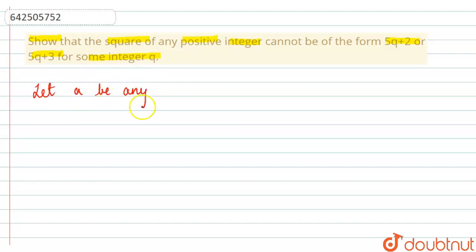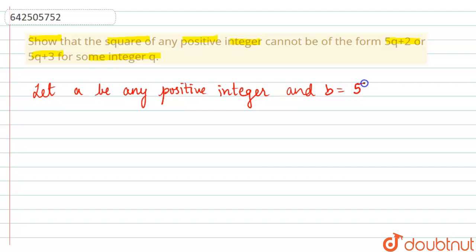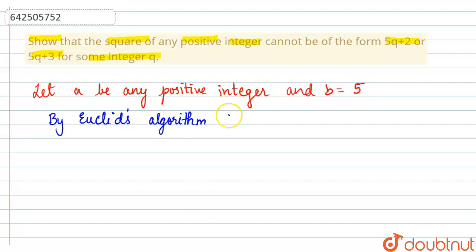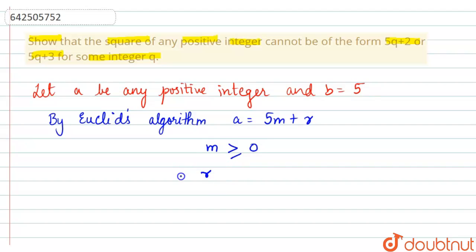First of all, let a be any positive integer and b is equal to 5. If b is equal to 5, then by Euclid's algorithm we can write a is equal to 5m plus r, where m is greater than or equal to 0 and r is greater than or equal to 0 and less than 5.